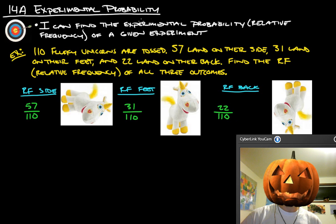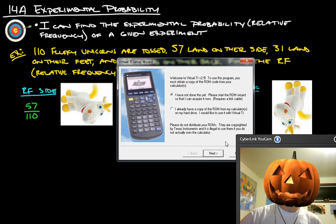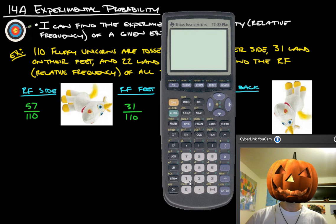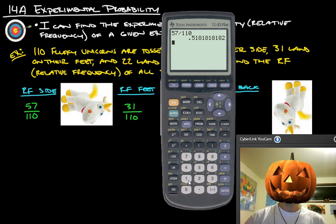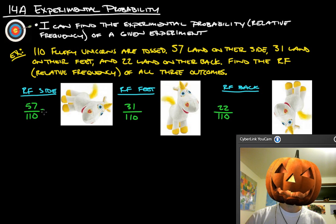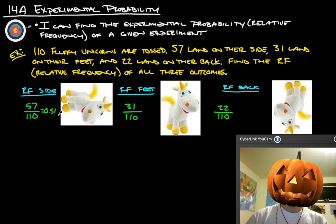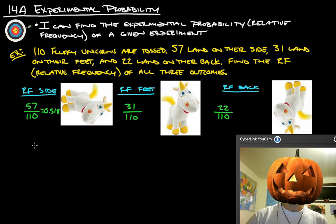So, let's use our handy-dandy calculator to figure that out. So let's do 57 divided by 110, and we get .518. The relative frequency is always as a percent, so it's 51.8%.